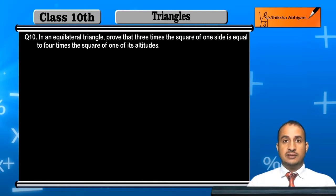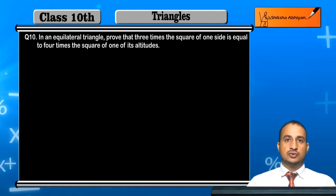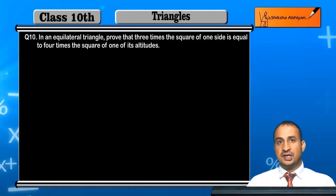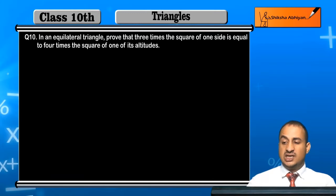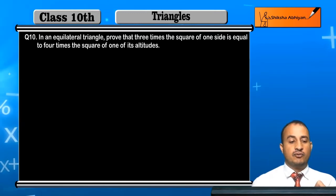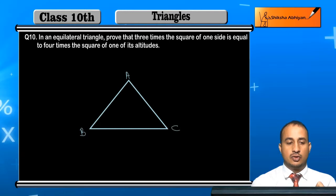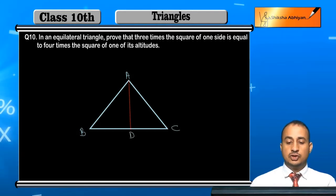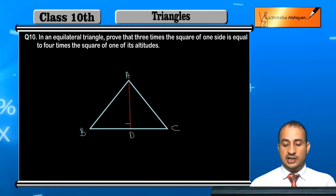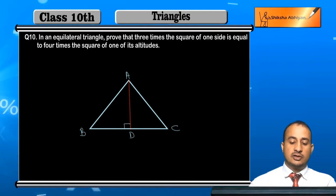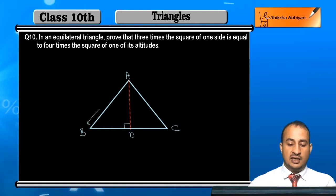First of all, I will take an equilateral triangle ABC and then draw the altitude AD here. Now this is the altitude AD. Let the side of the equilateral triangle be A — the side of the equilateral triangle.